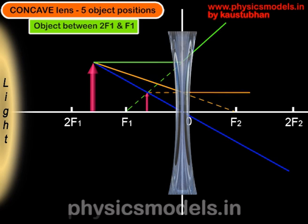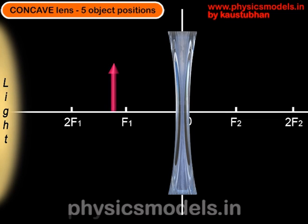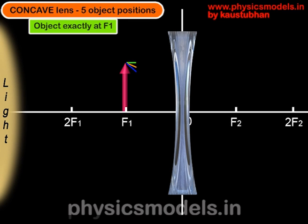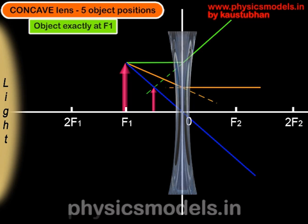Now we move the object closer to the lens and place it exactly on the focal point F1. We draw the same three rays. The green ray hits the lens, diverges upwards, and is projected back towards F1. The orange ray aimed at F2 travels parallel to the principal axis and is also projected backwards. The blue ray goes through point O. Just a clarification: all these colors are just to make the image easier to follow — we can use white light and get the same result. The image is virtual, erect, and diminished, and its position is between O and F1.